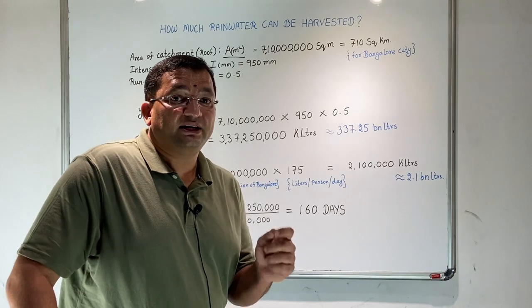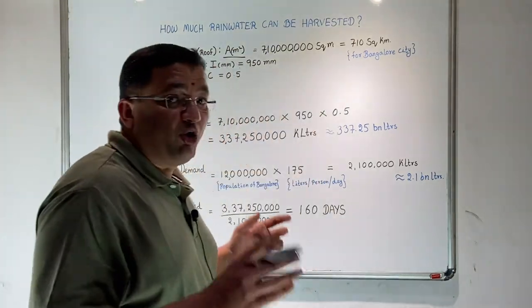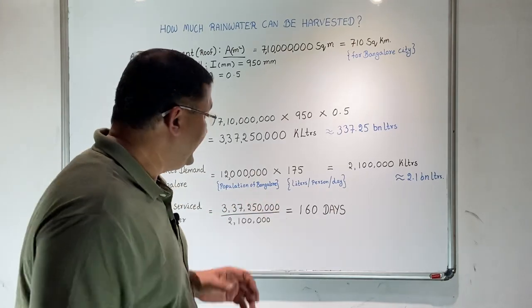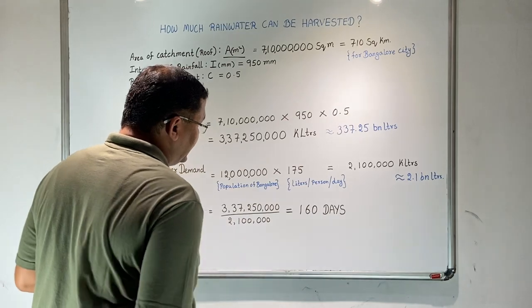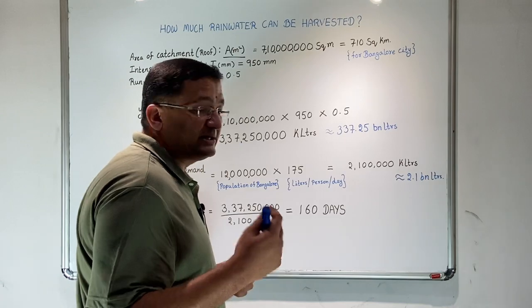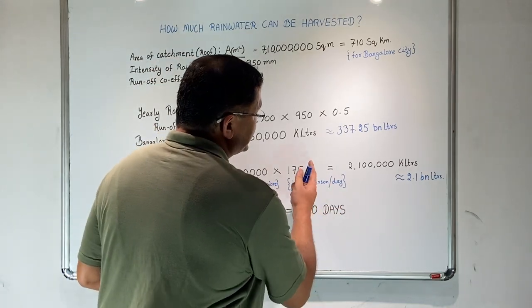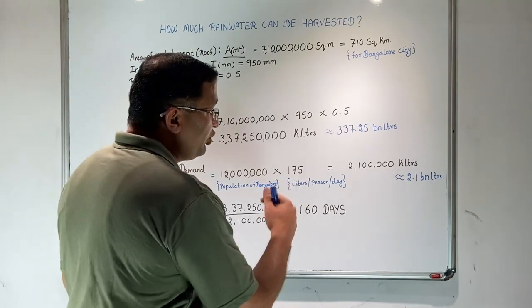We will now see the demand for water in Bangalore, how much water the city needs every day. The daily water demand is the population of 1.2 crores multiplied by the demand per person per day of 175 liters. This is slightly on the higher side, but we will go with this.